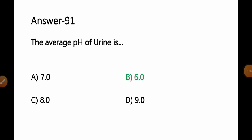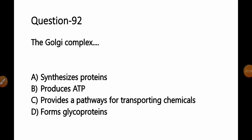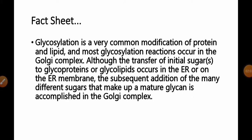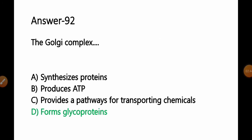Question 92: The Golgi complex: A) synthesizes proteins, B) produces ATP, C) provides a pathway for transporting chemicals, D) forms glycoproteins. Fact: Glycosylation is a very common modification of proteins and lipids, and most glycosylation reactions occur in the Golgi complex. Although the initial transfer of sugars to glycoproteins or glycolipids occurs in the endoplasmic reticulum, the subsequent addition of different sugars that make up a mature glycan is accomplished in the Golgi complex. Glycoproteins or glycolipids are finalized in the Golgi complex and initiated in the endoplasmic reticulum. Option D, forms glycoproteins, is the correct answer.